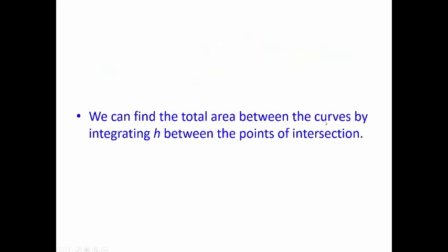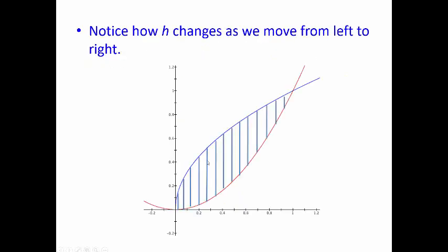We can find the total area between the curves by integrating h between the points where they intersect. If you remember the fundamental theorem of calculus for finding area under a curve, you just integrate. Here, what you're really doing is using the fundamental theorem of calculus to find the area underneath the blue curve, and then subtracting away the area underneath the red curve. That's it.